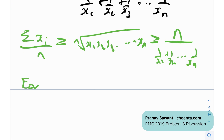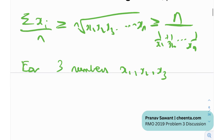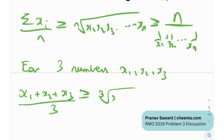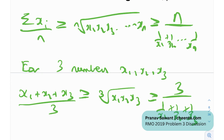For three numbers x1, x2, x3, we get the inequality: (x1 + x2 + x3)/3 ≥ (x1·x2·x3)^(1/3) ≥ 3/(1/x1 + 1/x2 + 1/x3).